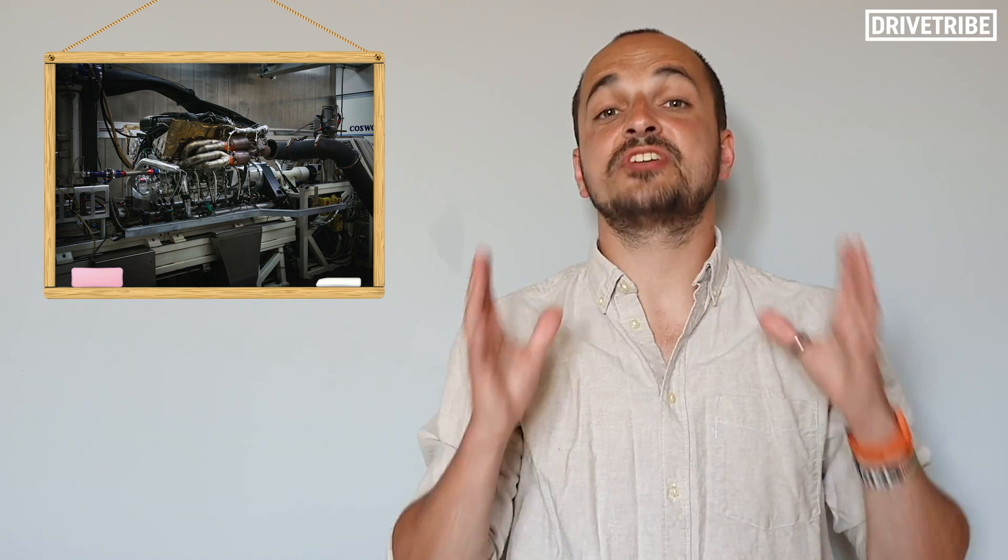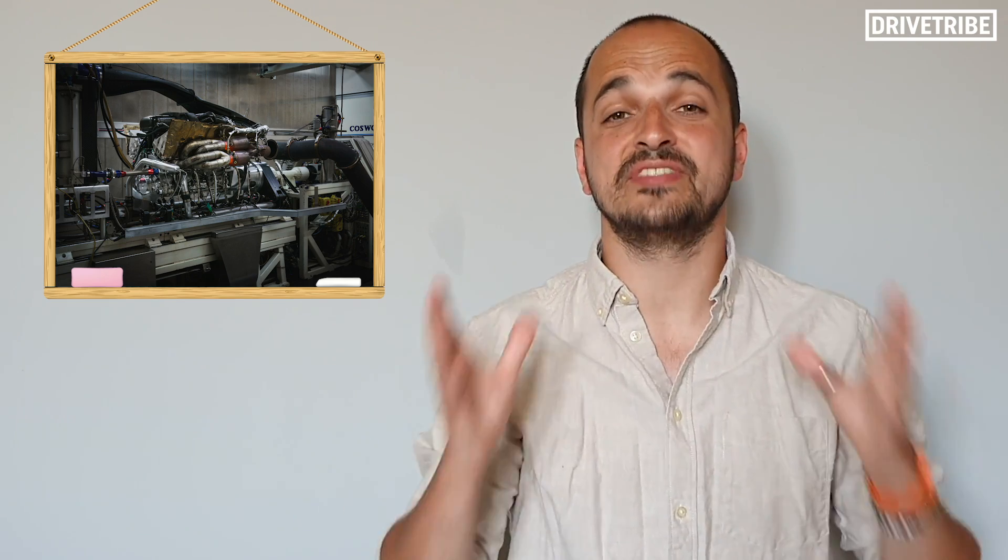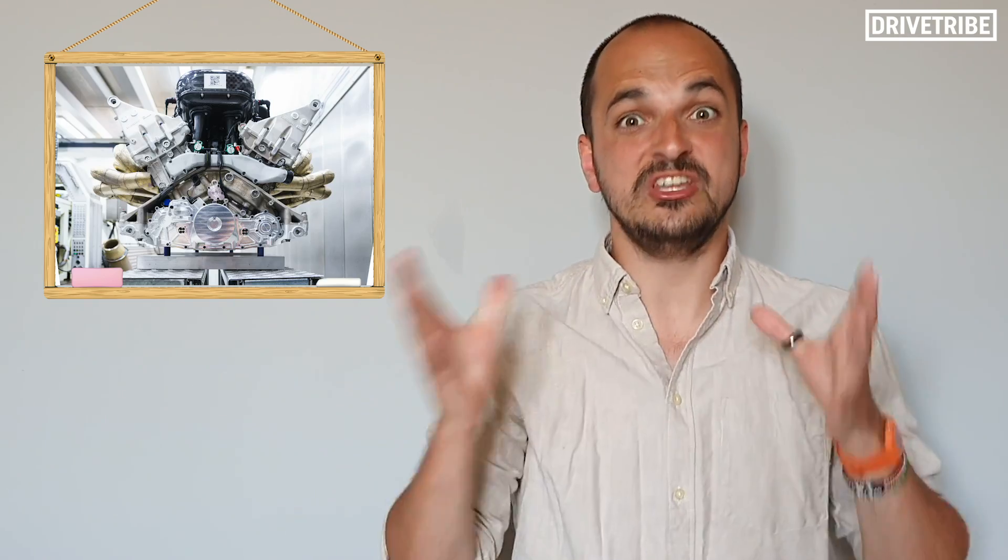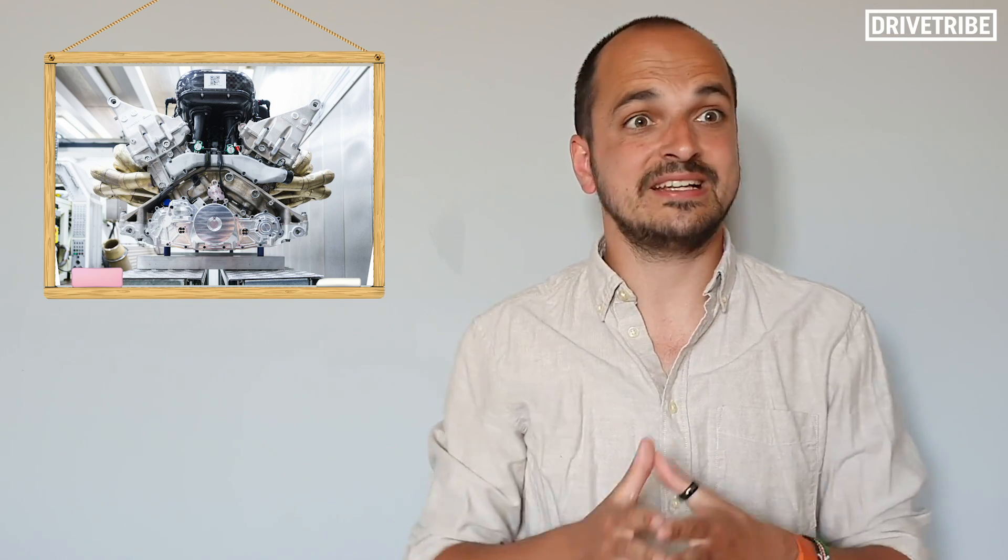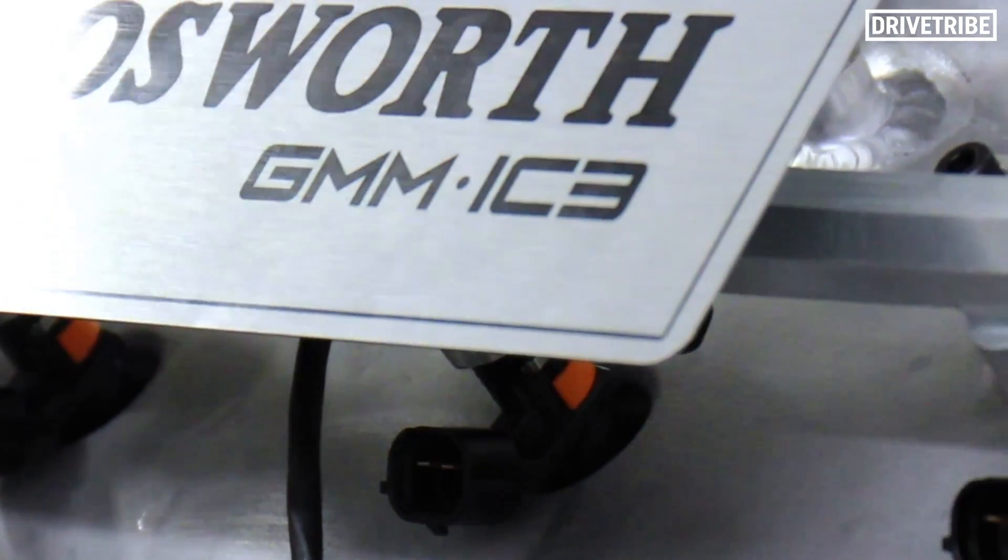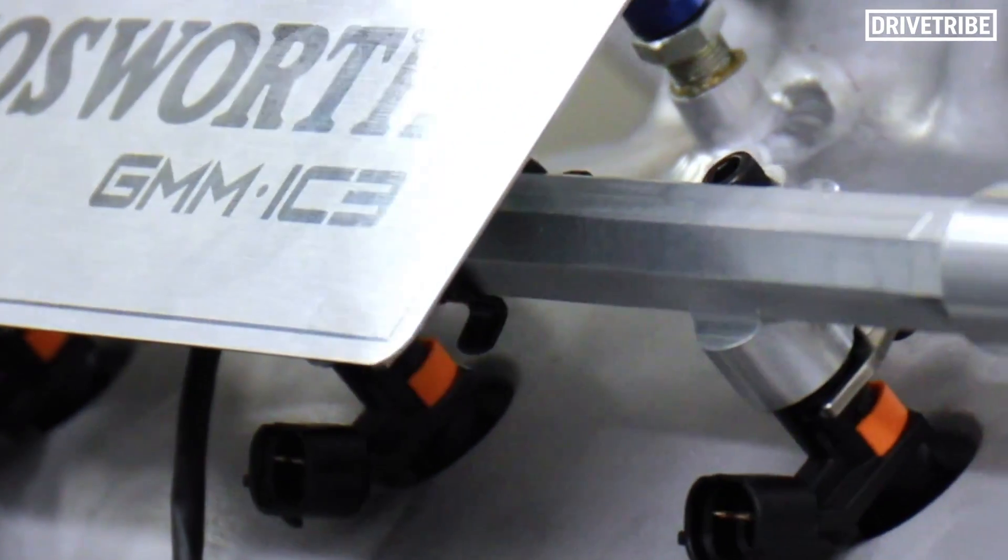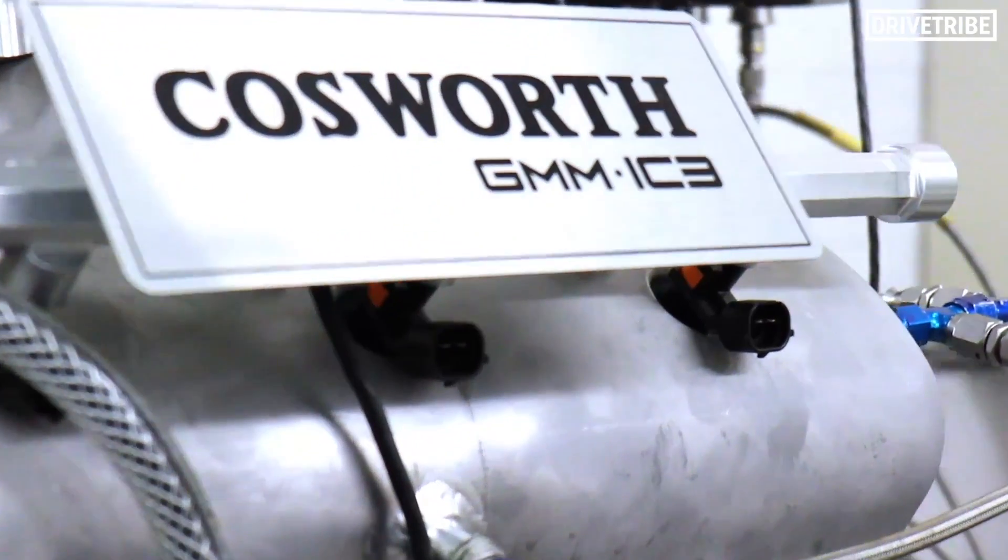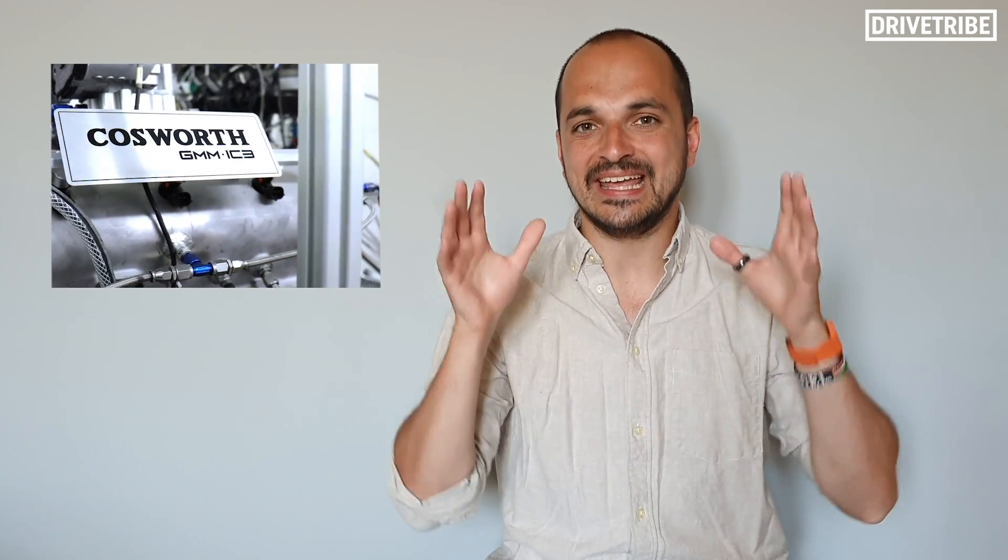These engines hark back to the glory days of naturally aspirated Formula 1, so you could be forgiven for thinking that it's remarkable that V12 engines like those can exist in this day and age of emissions, congestion zones and electrification. But there is a way to develop a V12 engine without getting in trouble with the regulations, and it starts with something much more humble: a tiny inline 3. Let me explain.